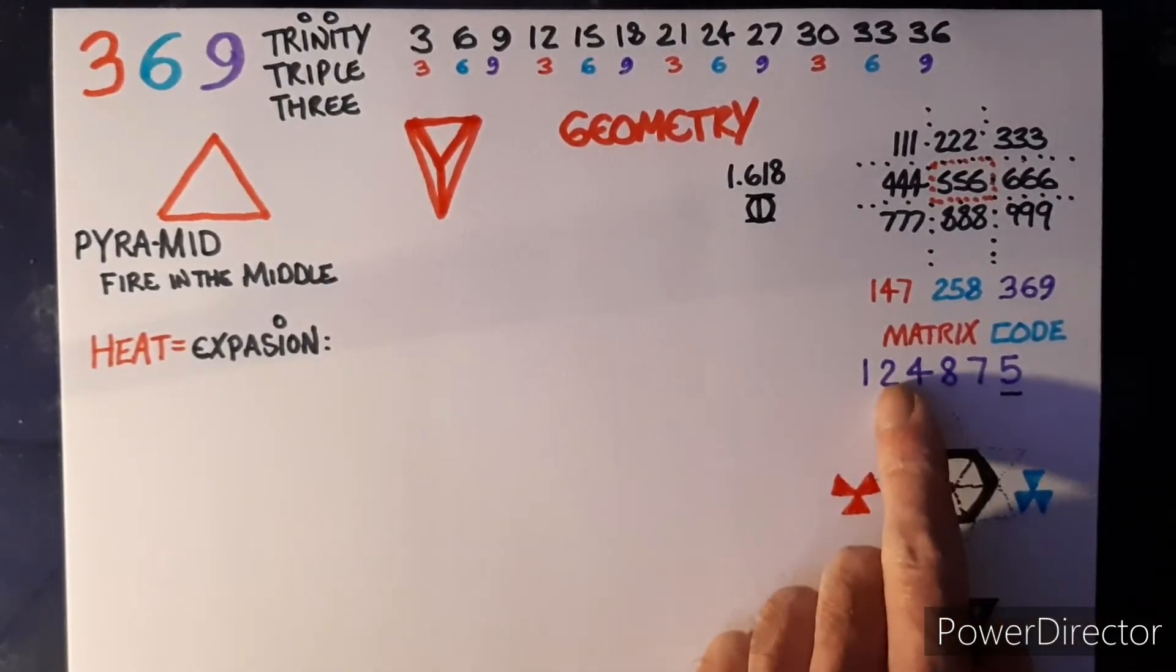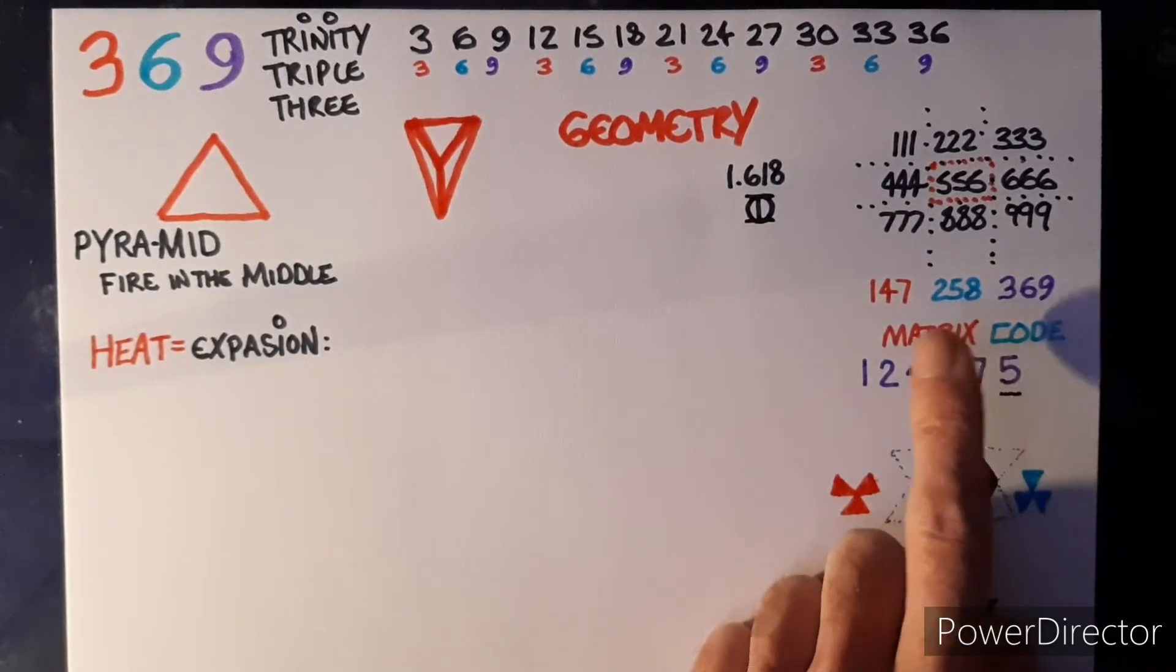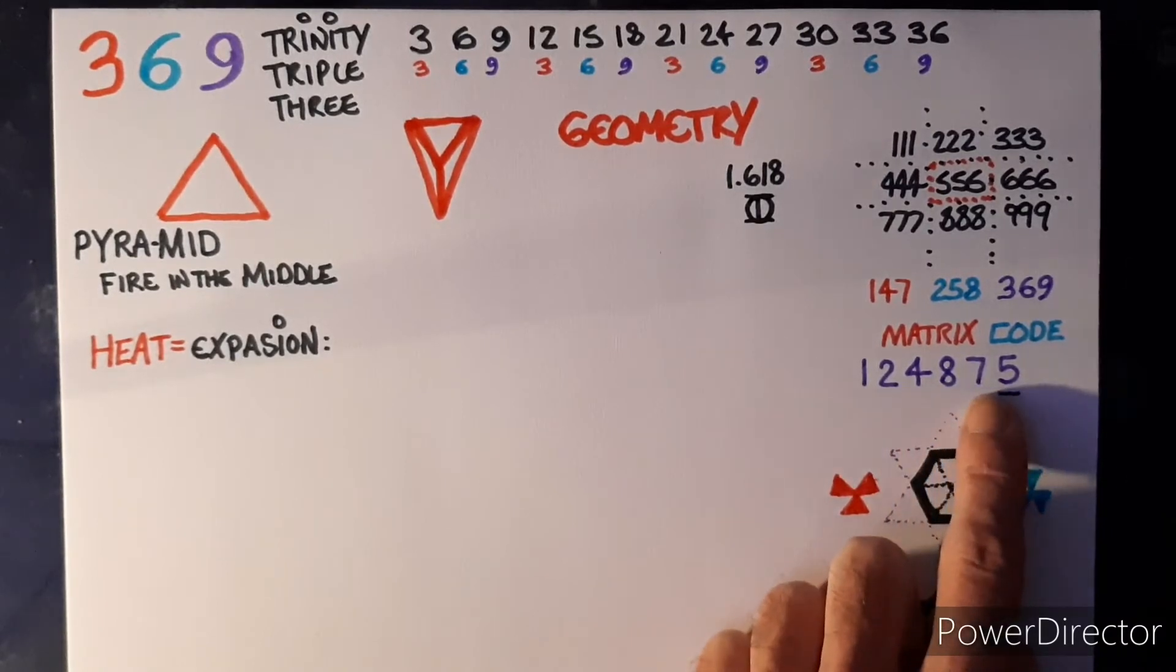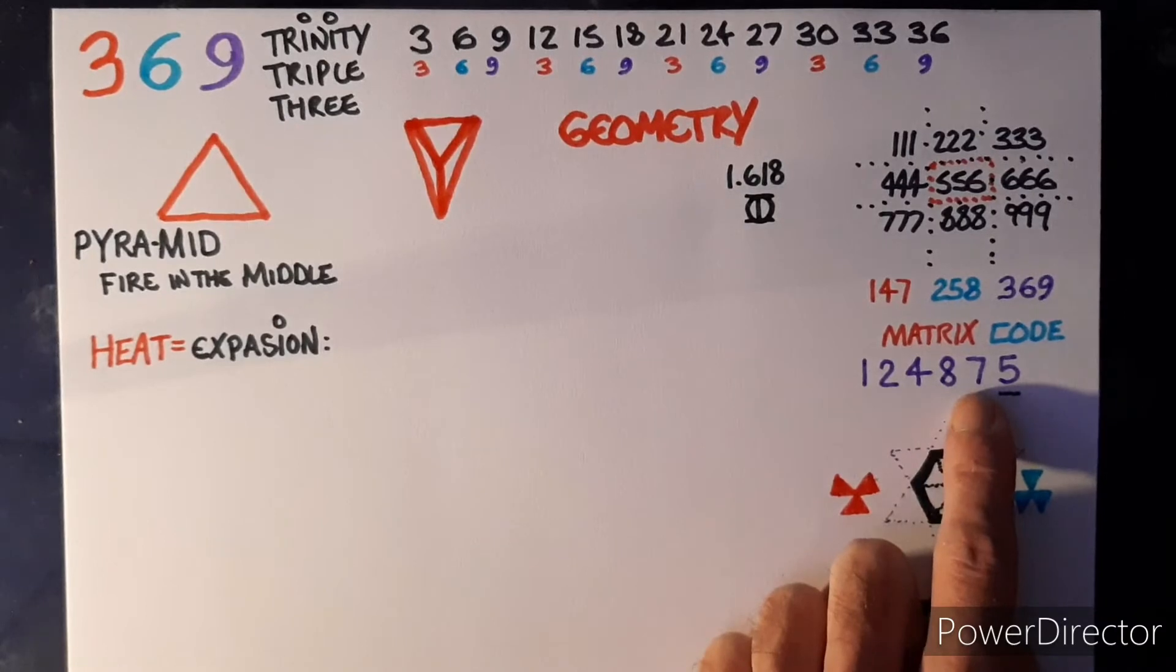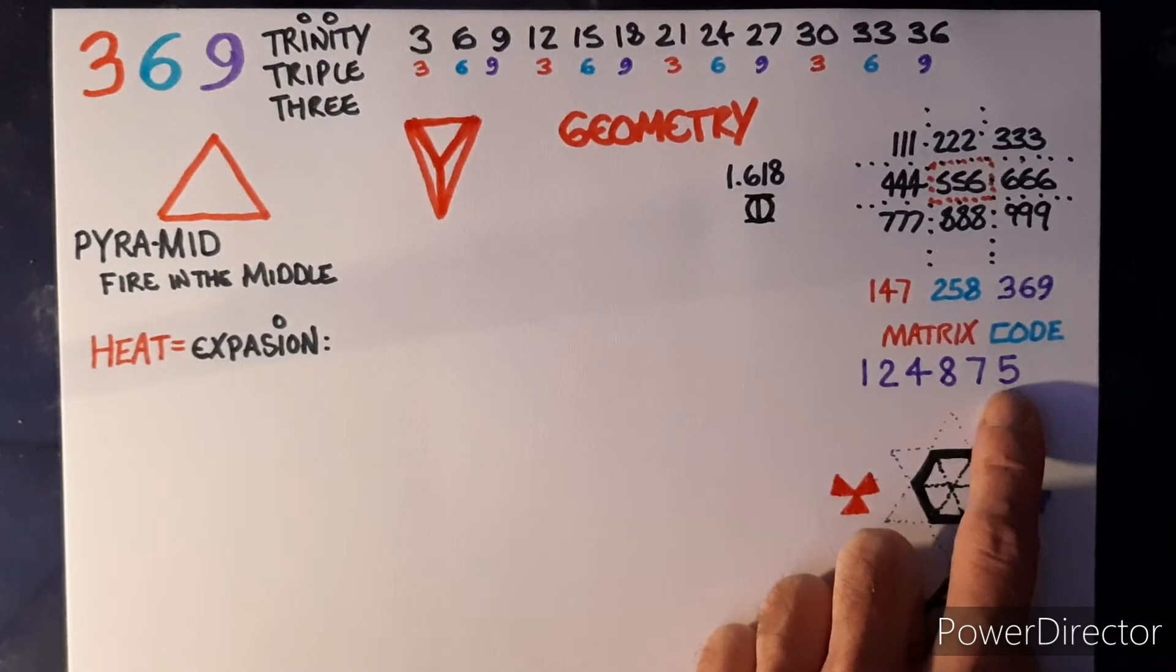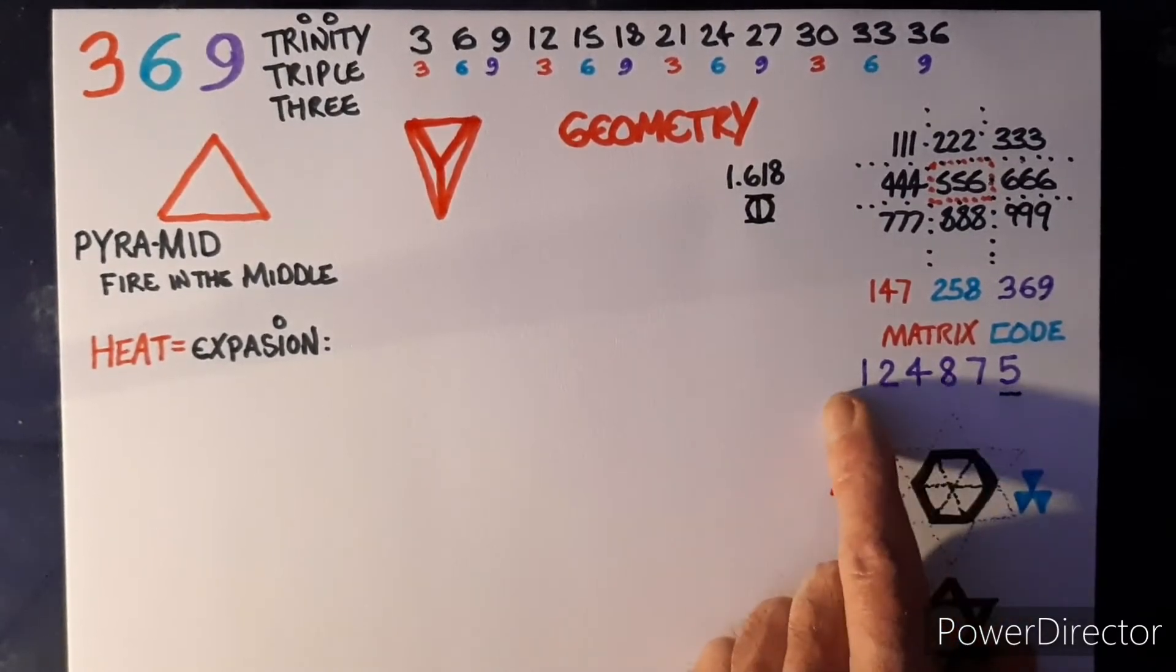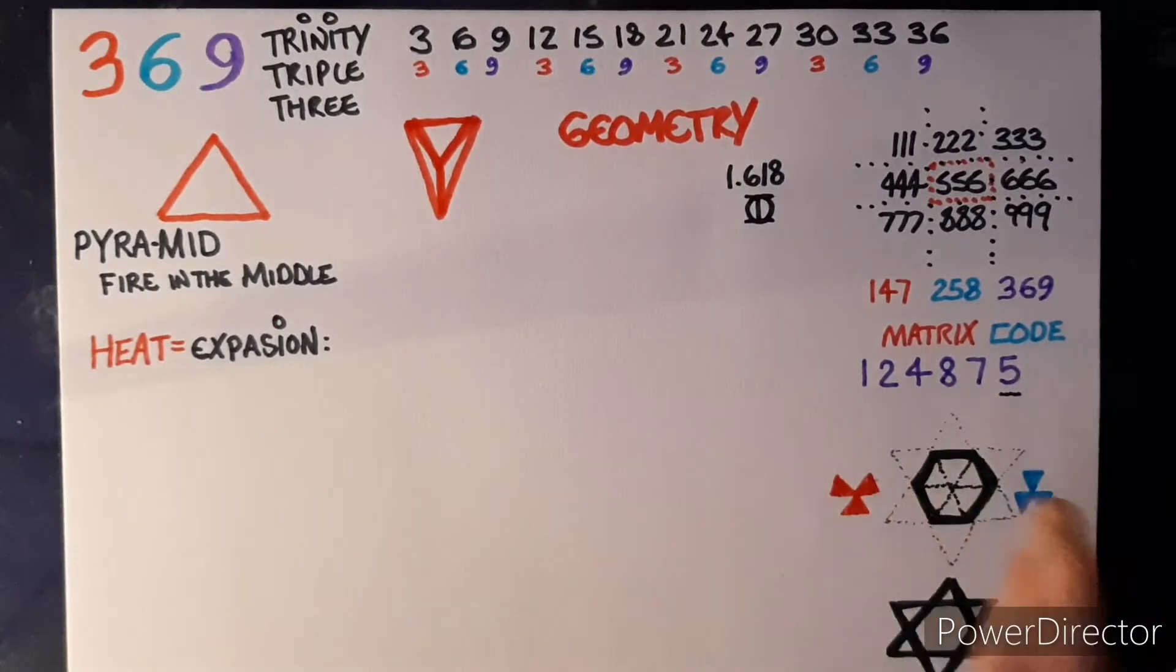Like the vortex, it goes one two four eight seven five, then it repeats itself. This is actually the doubling system—each number doubles. That's why it goes one two four eight. That would be 16 reduced to a seven, then 32 reduced to the five, 64 is 10 back to the one, 128 would be 11, one plus one is two. You're always going to get that sequence every time you double the number.